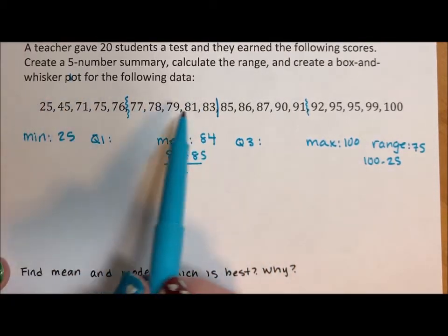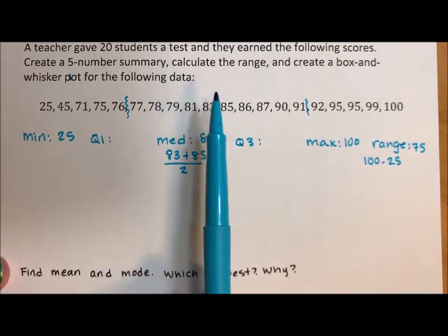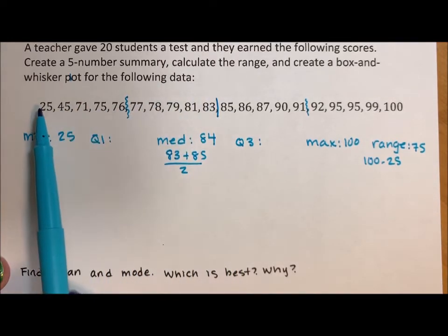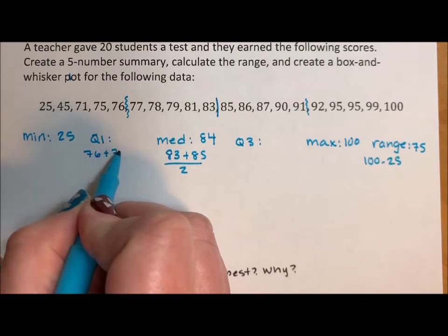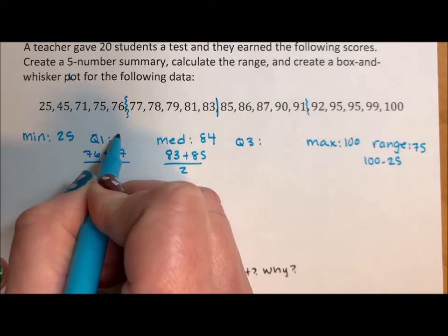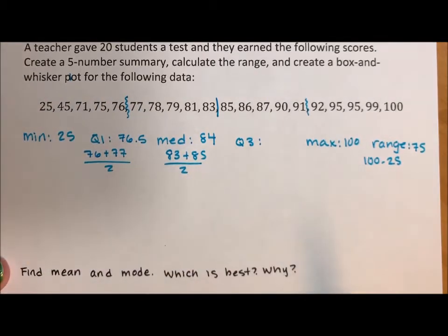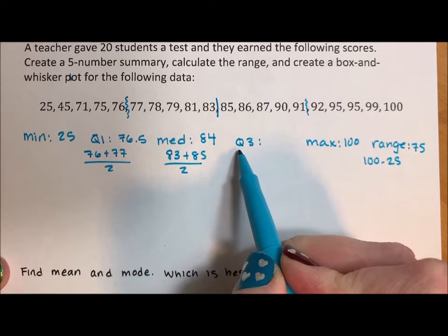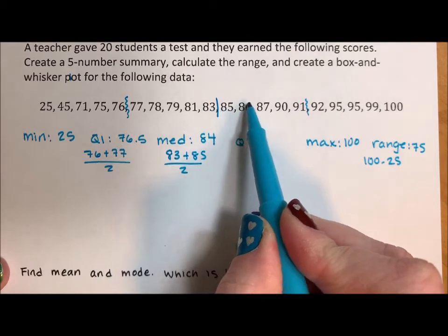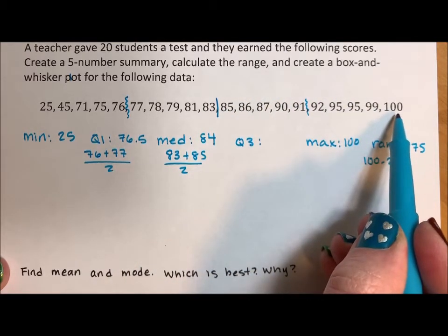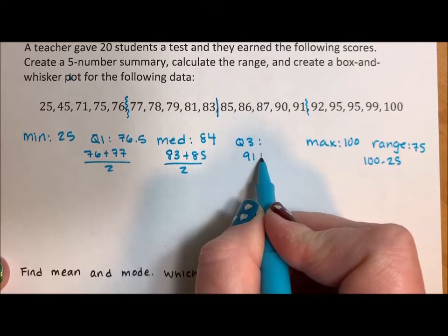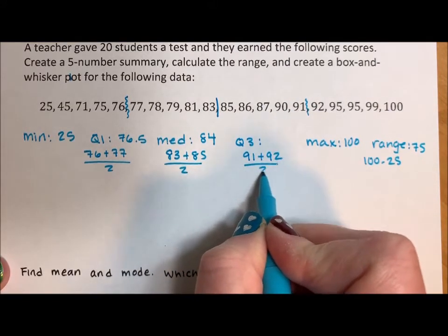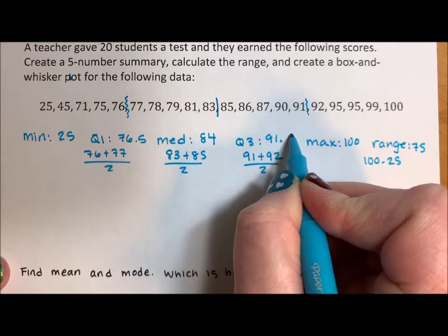Q1 is the median of the lower half. So the lower half are these 10 digits, and the middle is between number five and six. So 76 plus 77 divided in half is 76.5. The quartile three is the median of the top half of the data, between 14 and 15. So 91 plus 92 divided in half, which is 91.5.